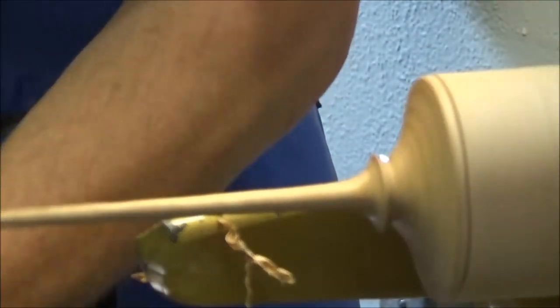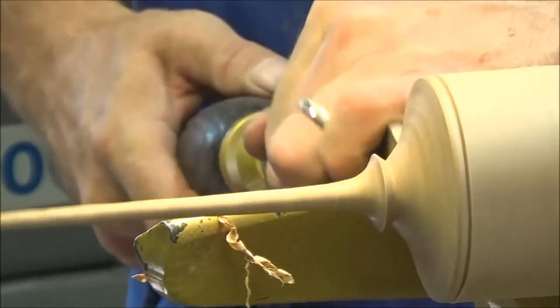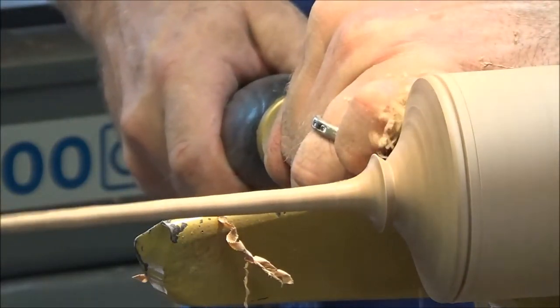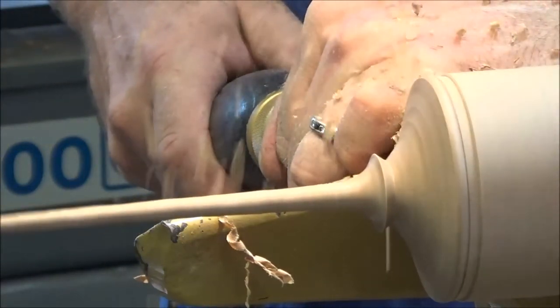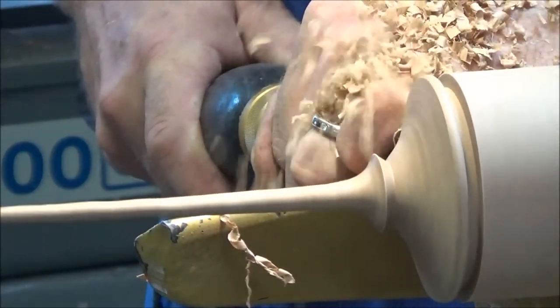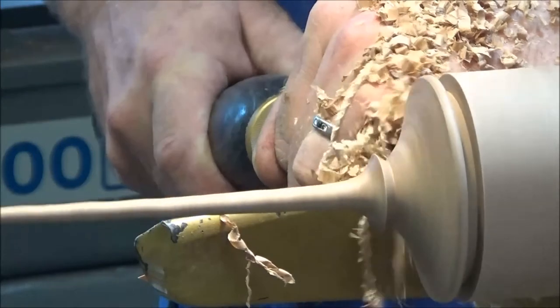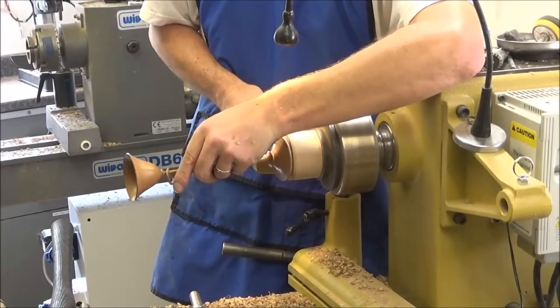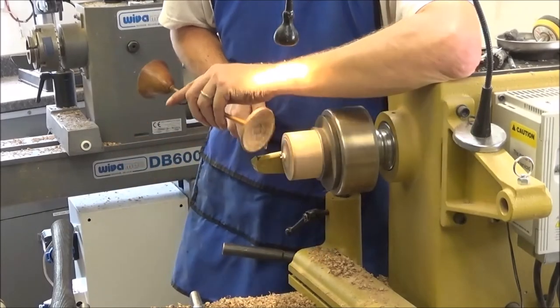So now, parting tool. To the stem there. We're going to slightly undercut this so it fits nicely. At slow speed. There we go. And you get a nice, clean parting off on the bottom.